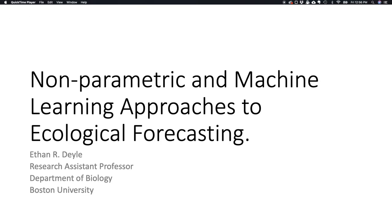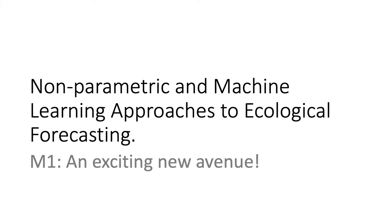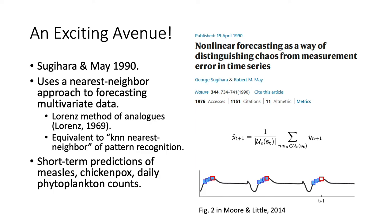This lesson is on nonparametric and machine learning approaches to ecological forecasting. I'm Ethan Dial, a research assistant professor in the Department of Biology at Boston University. I'll give a few different modules. The first module is an overview of this exciting avenue in ecological forecasting — though nonparametric approaches aren't exactly new. You can trace them back to a 1990 paper by George Sugihara and Robert May, which used a simple yet powerful approach still used in current research.